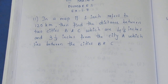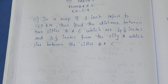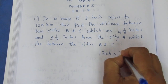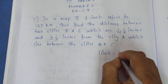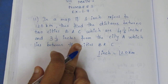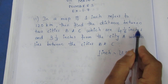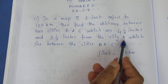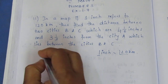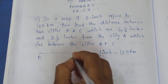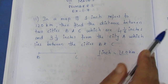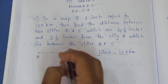Question: In a map, if 1 inch refers to 120 km, find the distance between 2 cities B and C which are 4 and 1/6 inches and 3 and 1/3 inches from city A, which lies between city B and C.